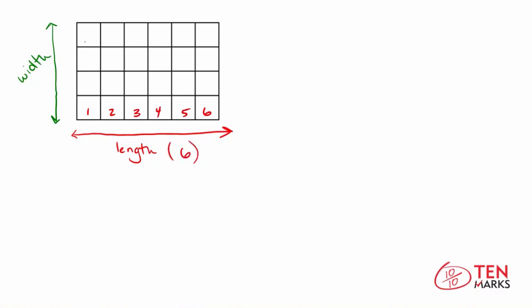Now let's talk about the width. There are one, two, three, four squares that make up the width, or up and down. So the width is four units.